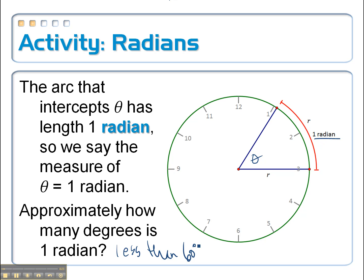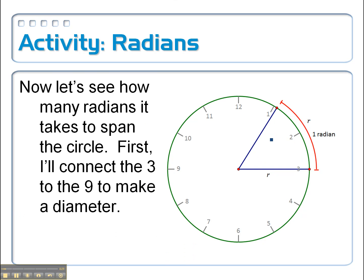And we also said that's about 60 degrees, just a little bit less, since each of these hours is equal to 60 degrees. So now let's see how many radians would that take to go all the way around the circle.